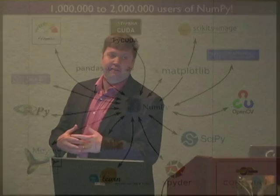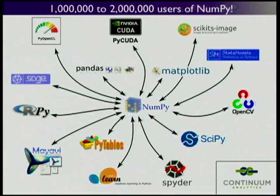Python users are many — there are software developers, web designers, web developers, and this other subset who are NumPy users. They use it for array-oriented computing. NumPy serves as the foundation of a large ecosystem of packages that depend on it: SciPy, Matplotlib, Scikit-Learn, Scikit-Image — it just goes on and on. There are probably between one and two million users of these tools, which is very gratifying to see.